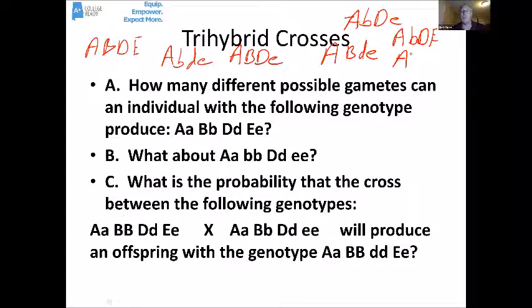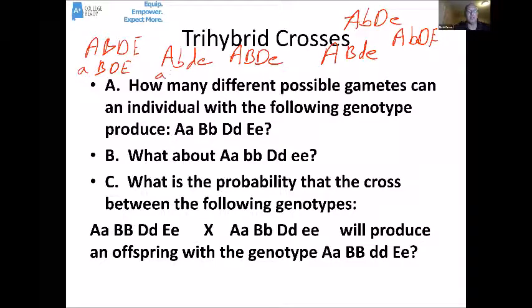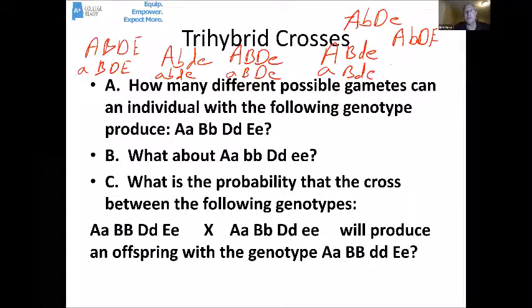We could also have all the little a versions of those same combinations: little a, big B, big D, little e; little a, little b, little d, little e; little a, big B, big D, little e; little a, big B, little d, little d. And you can see the pattern continuing — every distinct combination of one allele from each pair.